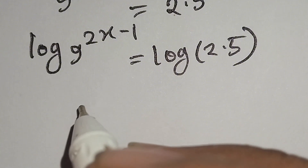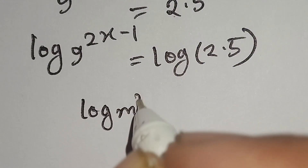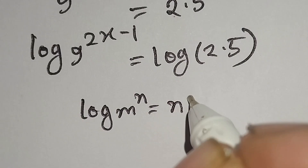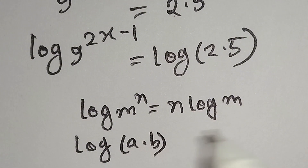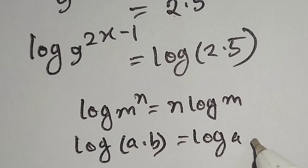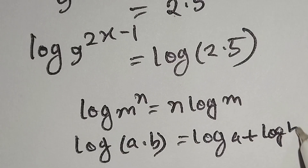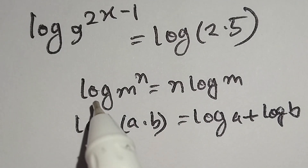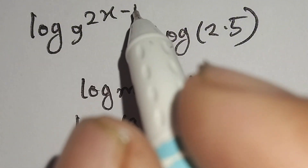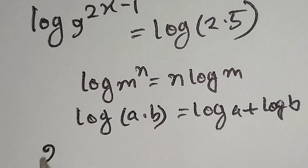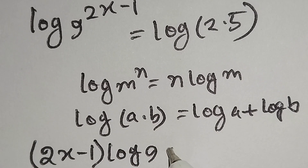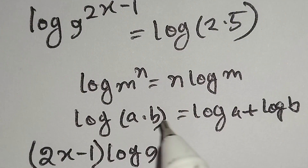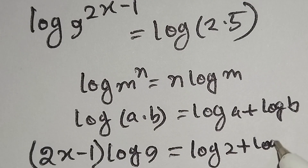We know log m to the power n is equal to n log m, and log a times b is equal to log a plus log b. According to these identities, we can write log of 9 to the power 2x minus 1 as 2x minus 1 times log 9, and log of 2 times 5 as log 2 plus log 5.